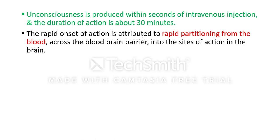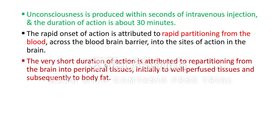The rapid onset of action of barbiturates is attributed to rapid partitioning from the blood across the blood-brain barrier into the site of action in the brain. Because of this rapid partitioning from the blood, barbiturates cross the blood-brain barrier and produce their action through the brain.